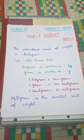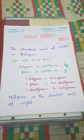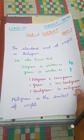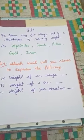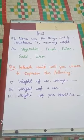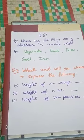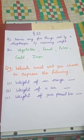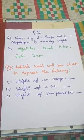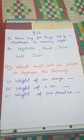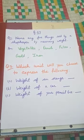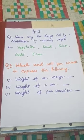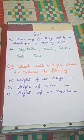Now, come to the review exercise. Question number 1: Name any 5 things sold by a shopkeeper by measuring weight. The answer is: